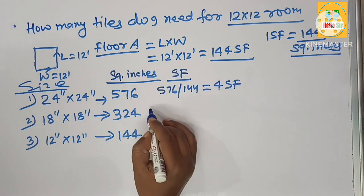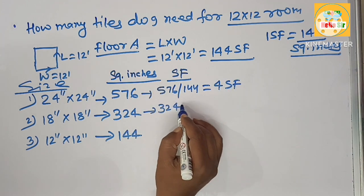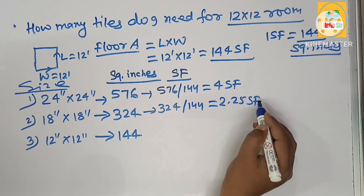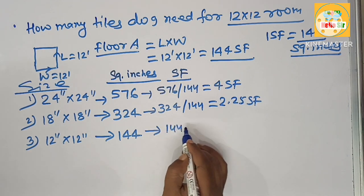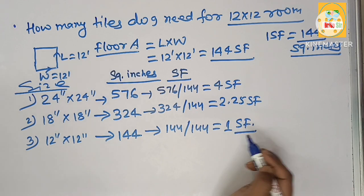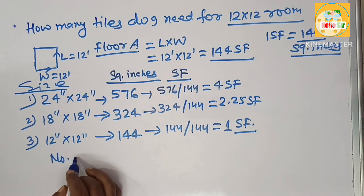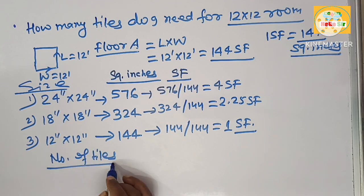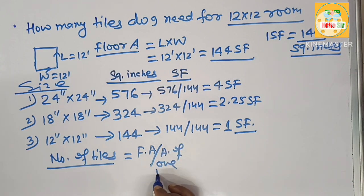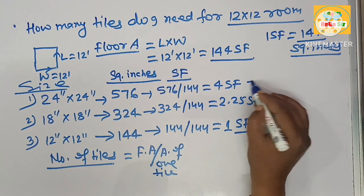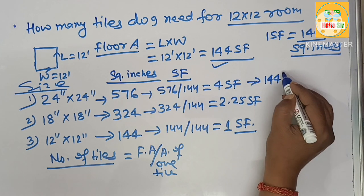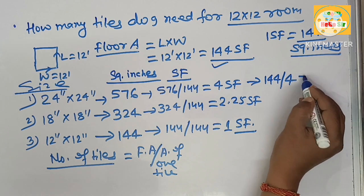For the 18×18 tile: 324 divided by 144 equals 2.25 square feet. For the 12×12 tile: 144 divided by 144 equals 1 square foot. The number of tiles required equals floor area divided by area of one tile. For the 24×24 tile: floor area is 144 square feet divided by 4, which comes to 36 tiles.